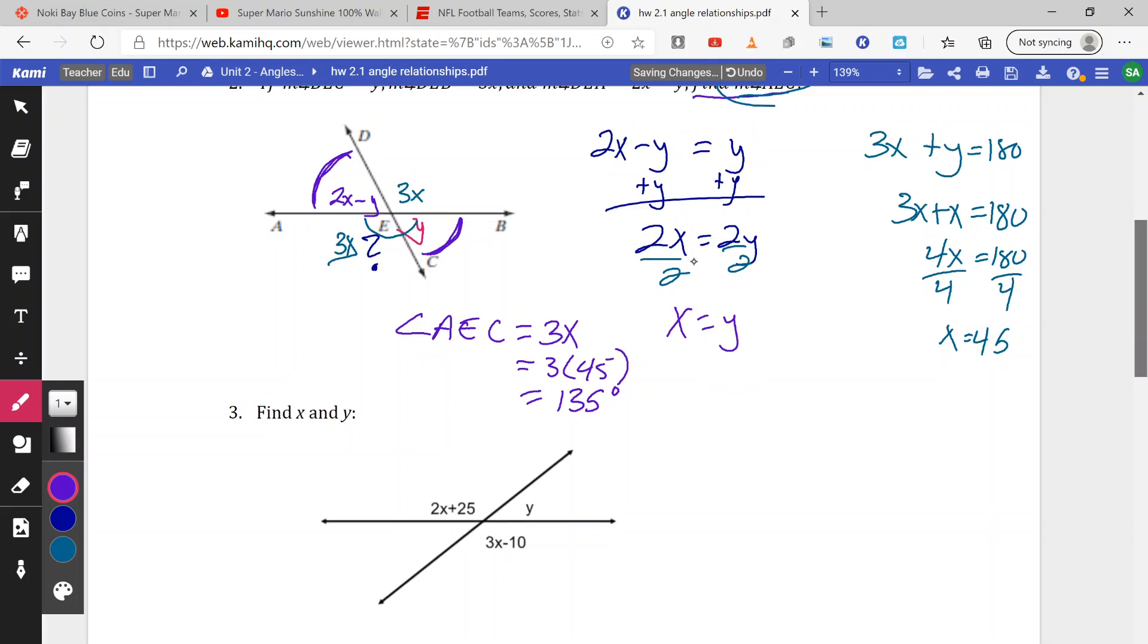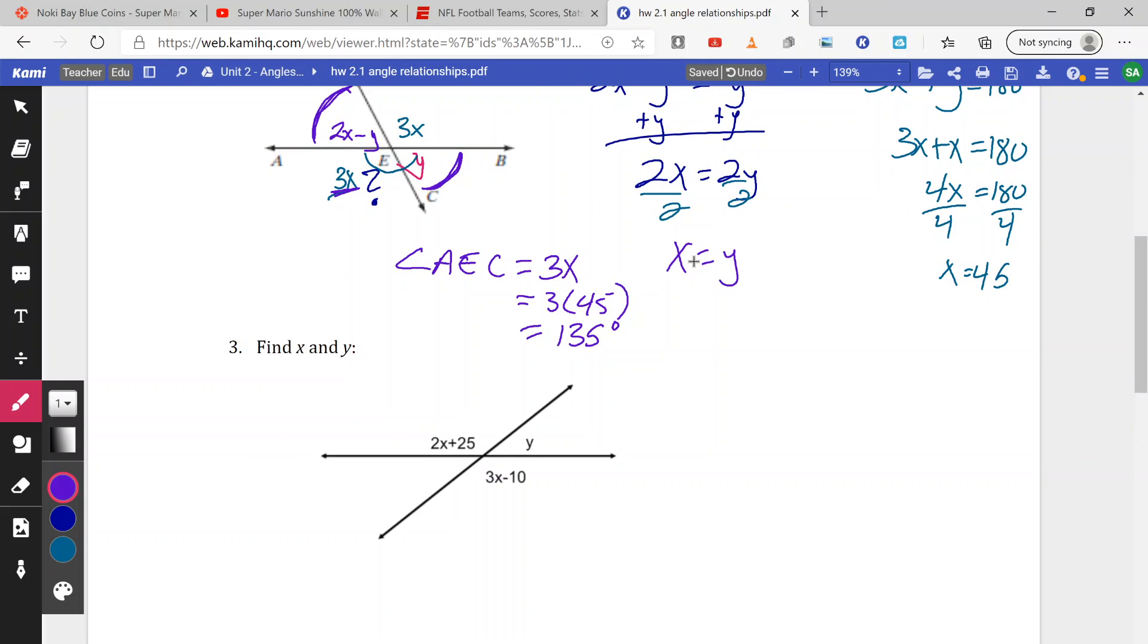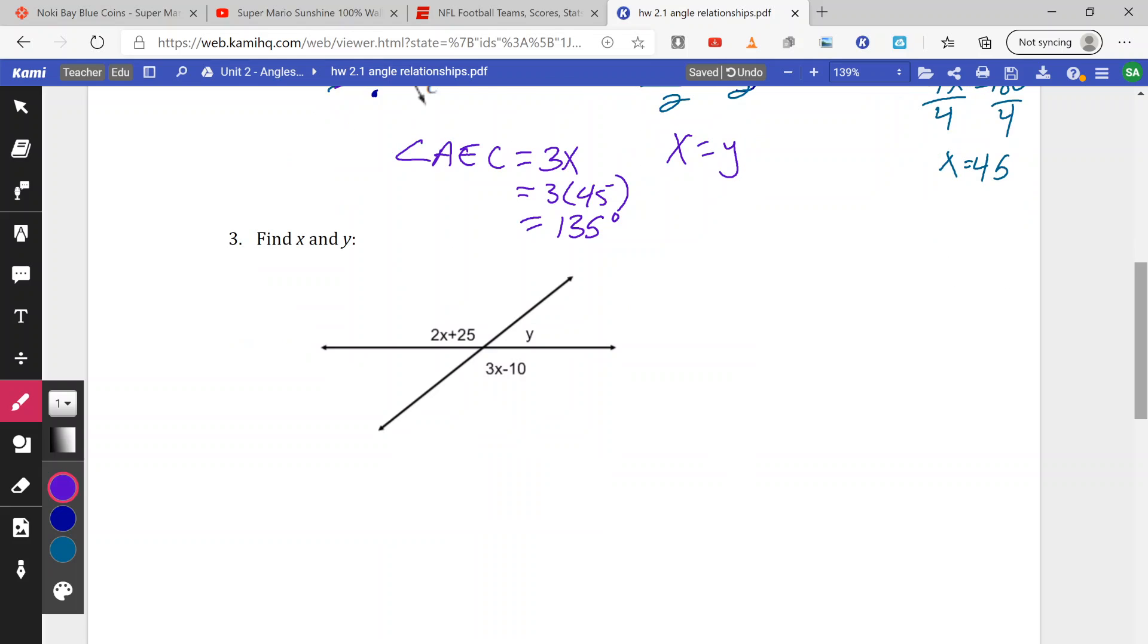So it's a substitution problem where we have to get one variable equal to another. In this case, we can use them interchangeably. x equals y. Again, AEC is written in terms of x. So I'm going to replace the y with x. And then I will solve for a given x and then substitute the value of x into what AEC is equal to.